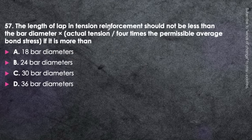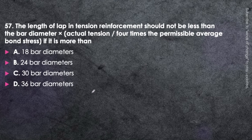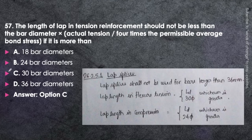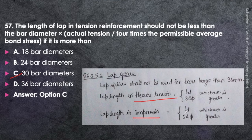Next question: The length of the lap in tension reinforcement should not be less than 30 bar diameters — option C. The lap length in flexural tension is given by the development length L_D or 30 times the bar diameter, whichever is greater. In compression, the lap length is reduced to L_D or 24 times the diameter, whichever is greater. This is specified in IS-456 clause.